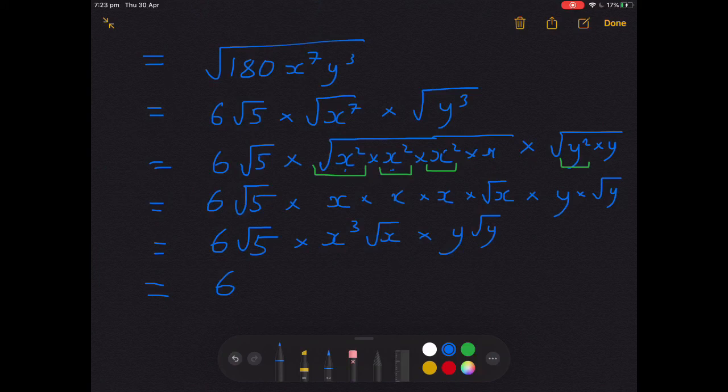x times x times x at the front here is x cubed. Final cleanup: 6 x cubed y root xy. And we check the answer to see if it's correct, and it is. Wonderful. Alright, that's it. Good luck with your exercises.